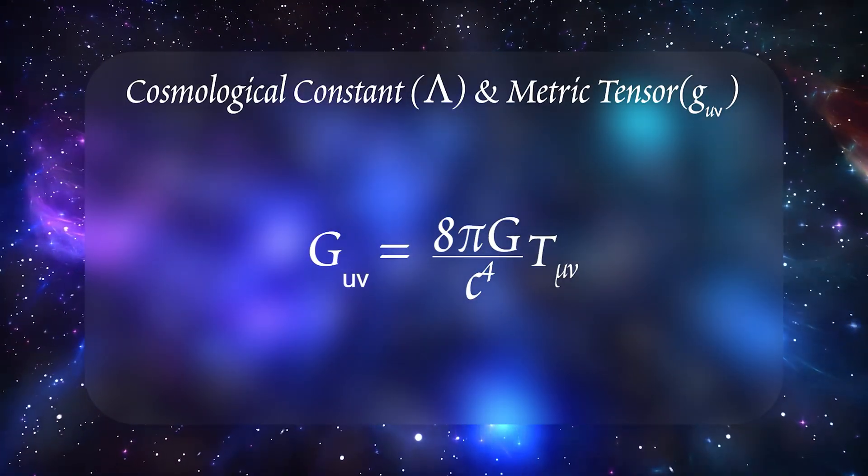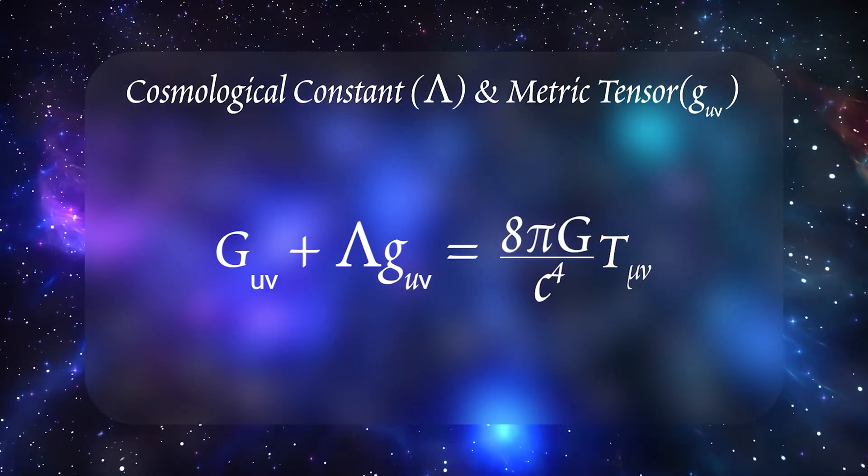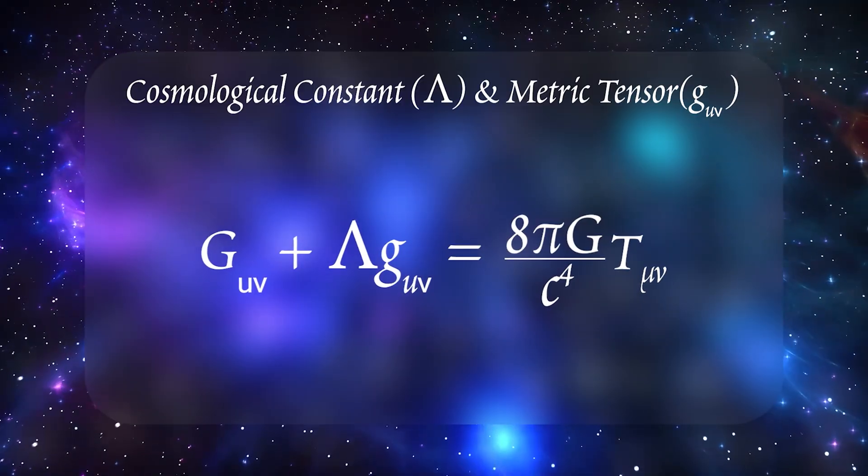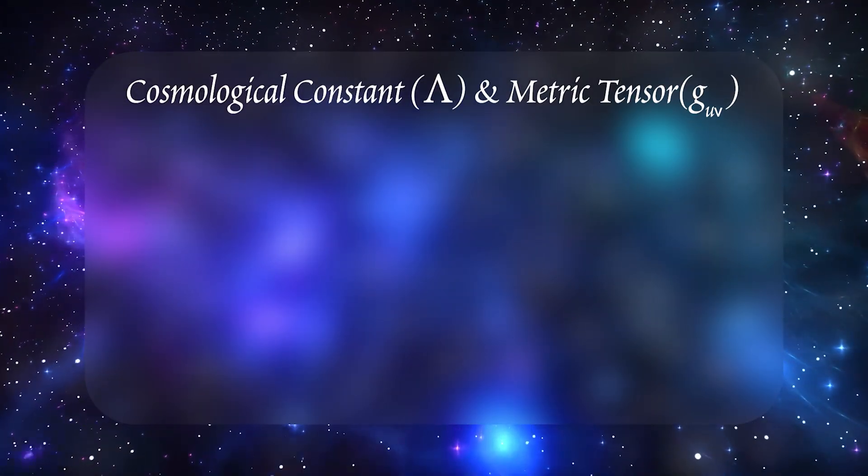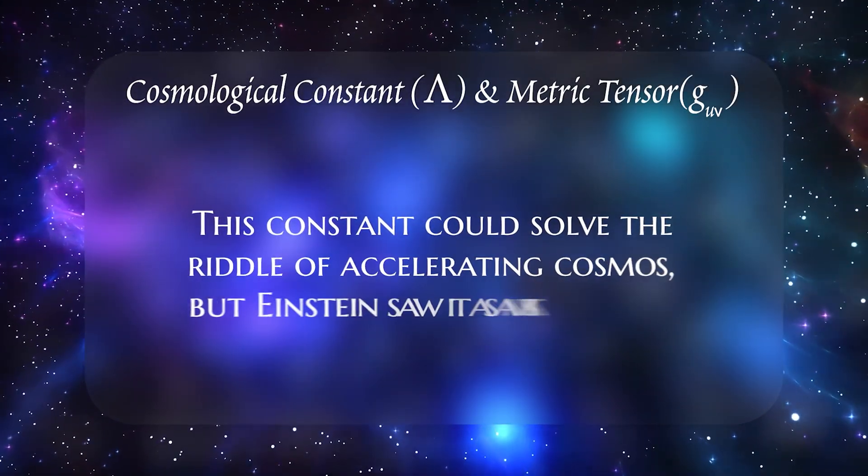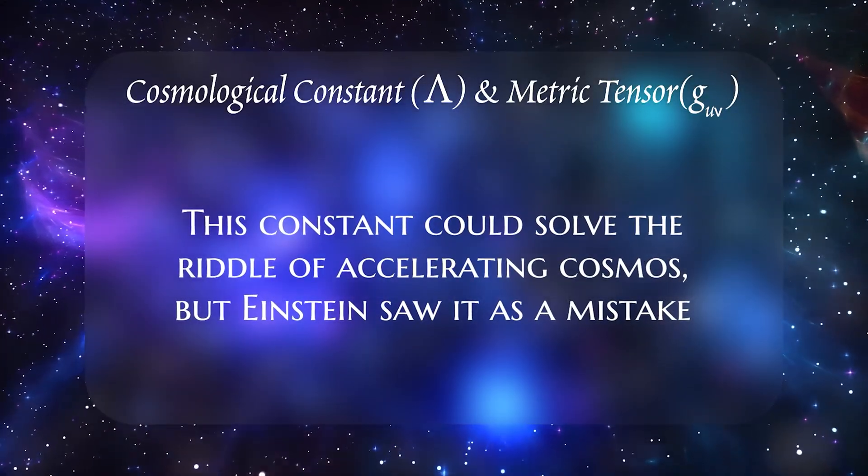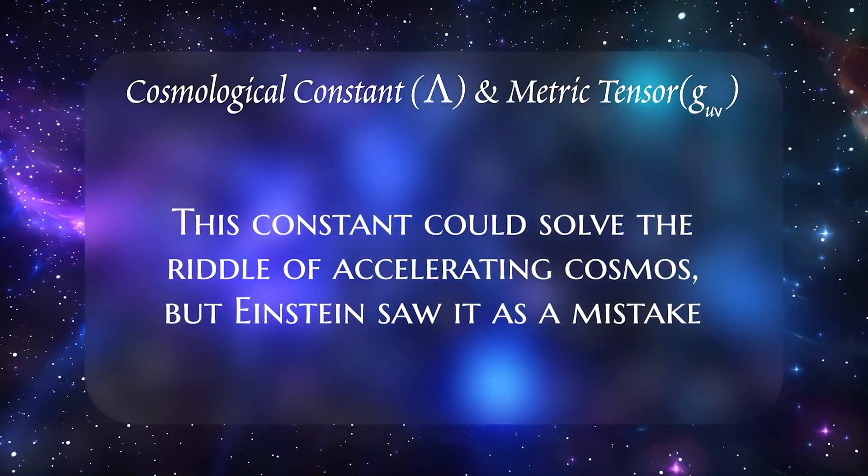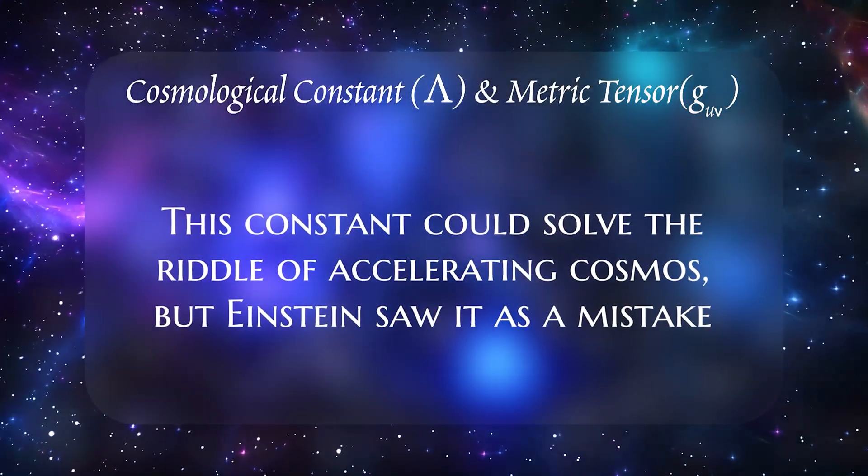If cosmological constant is zero, you get a simpler set of equations. If not, you might have a runaway expansion, like dark energy. Einstein originally added this term to keep the universe static but later called it a mistake. Yet modern data suggests it might solve the riddle of an accelerating cosmos.